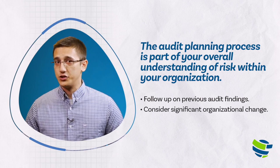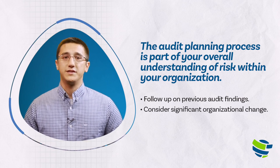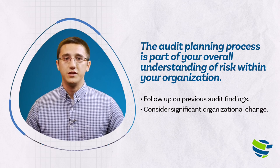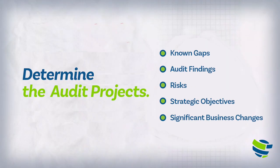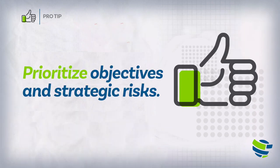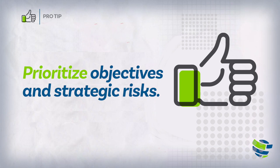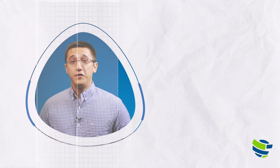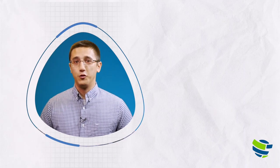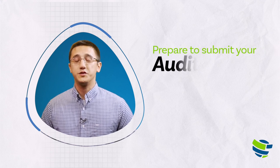Significant changes to your organization, such as mergers and acquisitions, are also areas that could be ripe for performing audits to ensure new processes are operating to fulfill their objectives. Now it's time to decide what audit projects to perform and outline their general objectives, which will be important information for your team to execute audits as intended. Here are some audit topic sources. Another pro tip: prioritize objectives and strategic risks rather than merely auditing based on a predefined rotation. There may be processes in place already in your audit charter or other policy governance documents.